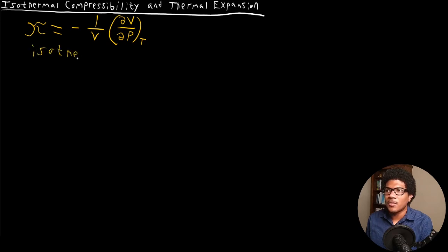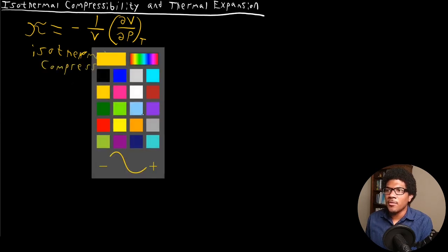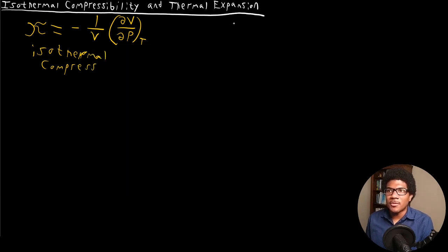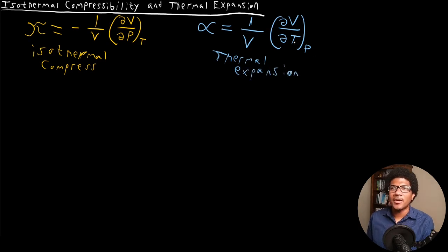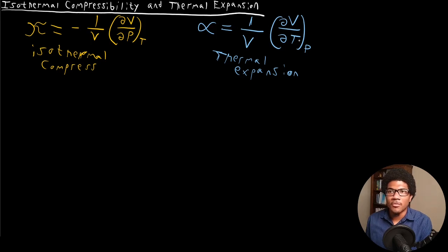That is our isothermal compressibility. The other useful property is the thermal expansion coefficient, which we denote with the Greek letter alpha. That one is 1 over V times the partial derivative of V with respect to T at constant P. For this property, we don't need the negative sign because as temperature rises, the volume rises — they're directly proportional. One thing to notice about both formulas is this 1 over V term in front of the derivatives.